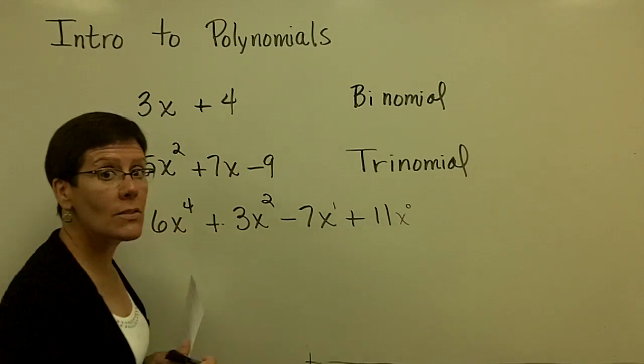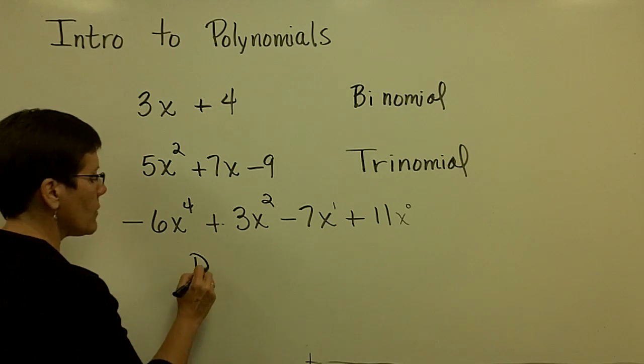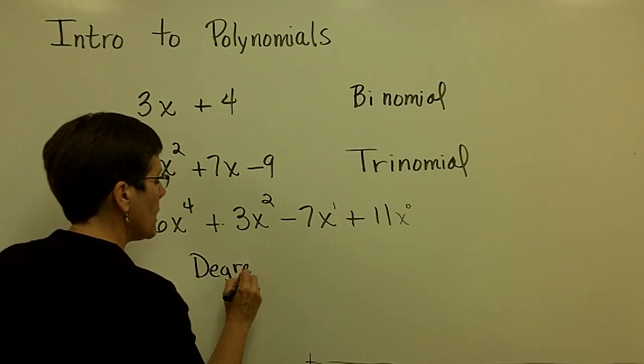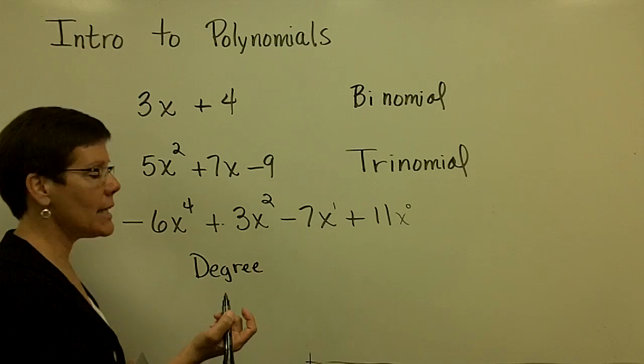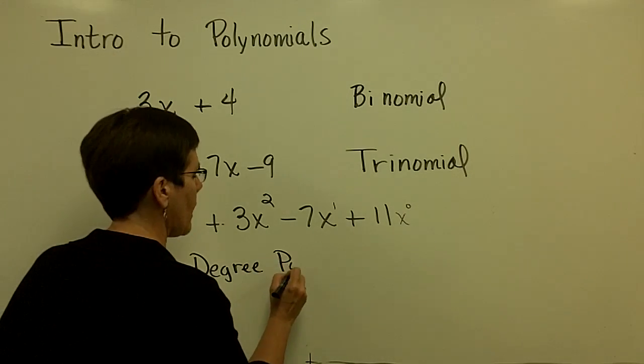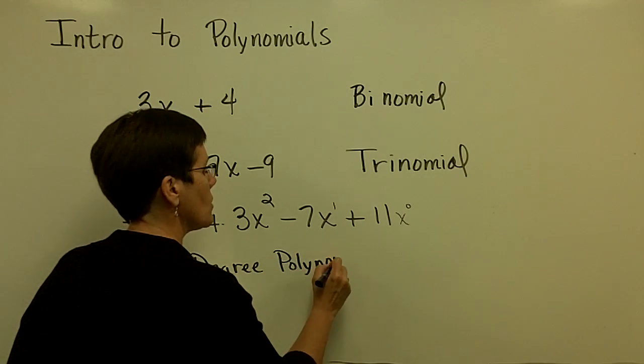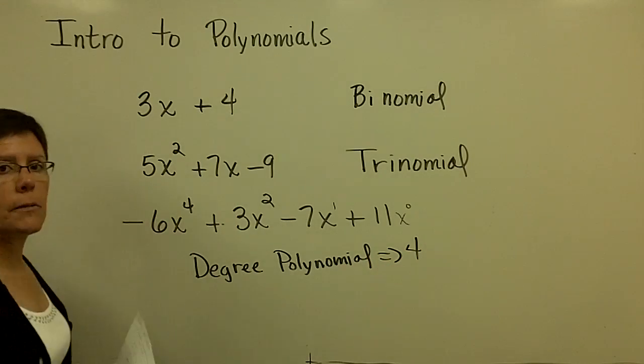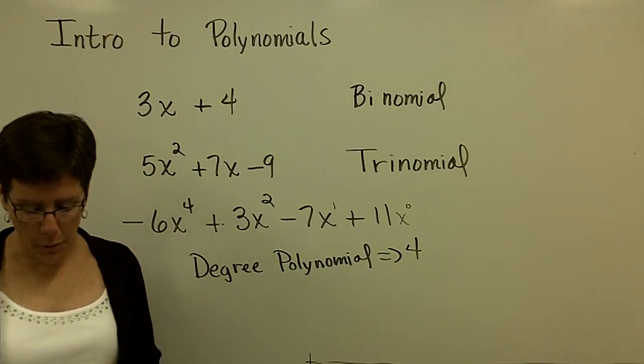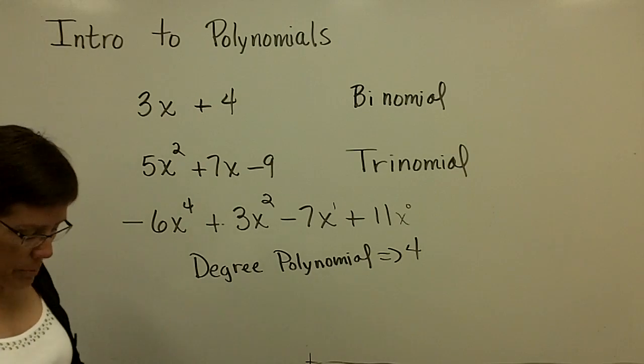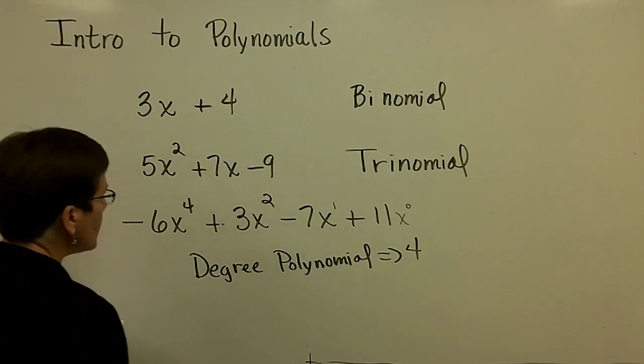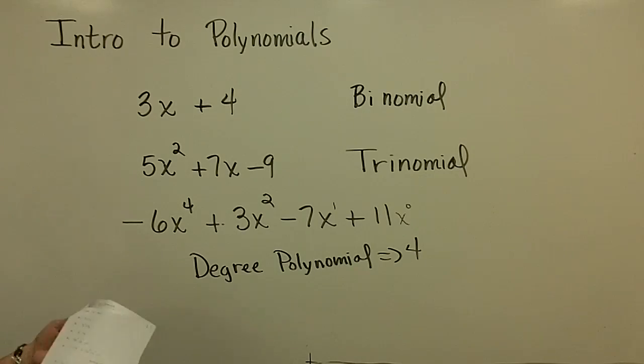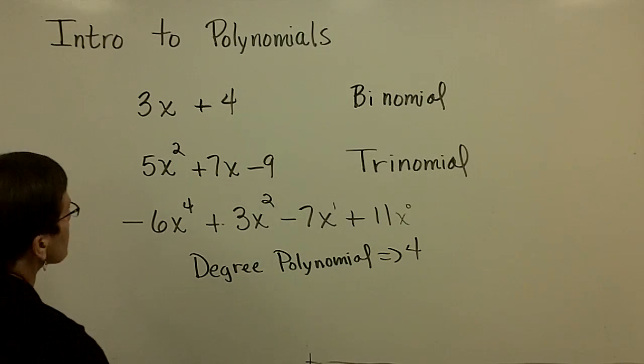And the degree of that term is 0. And finally, the degree of this overall polynomial is just the highest degree on any one term. So the degree of the polynomial for this one is 4 because the highest exponent is on that 6x⁴. Again, please remember that you should rewrite polynomials in descending order.